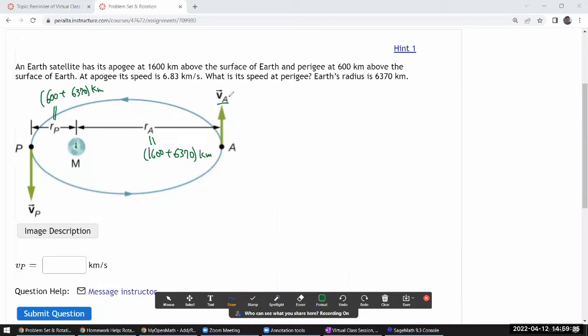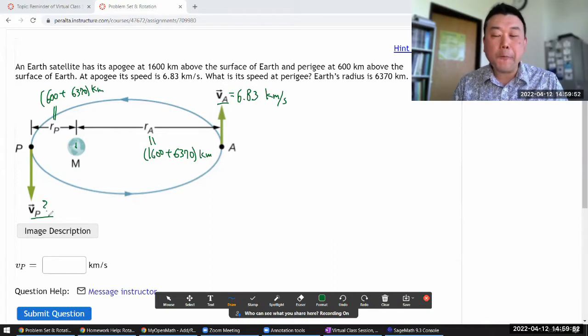And perigee is at 600 kilometers above, so this would be now 600 plus 6370. At apogee, this speed is 6.83 kilometers per second. What is the speed at perigee?